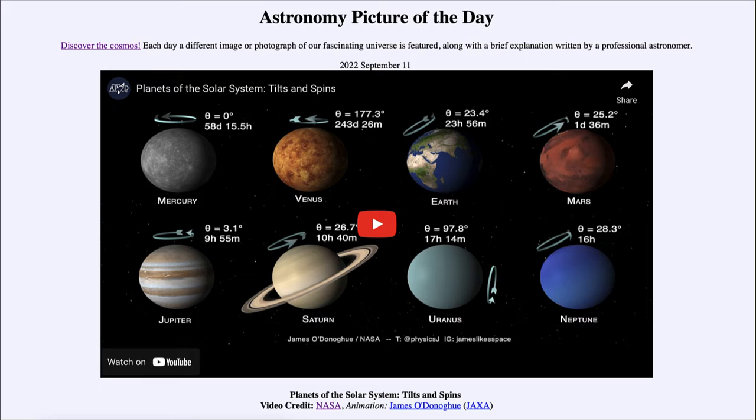A zero degree tilt for something like Mercury means it's essentially straight up and down. If we look at our Earth, we have a 23 and a half degree tilt, which is what gives us our seasons.